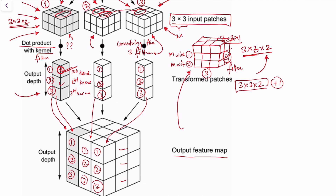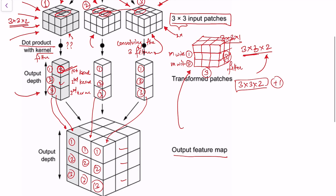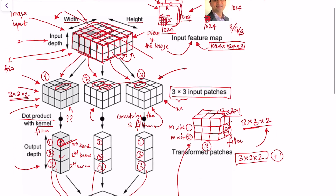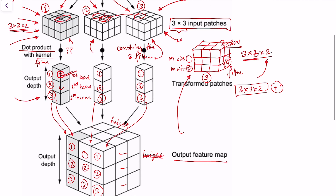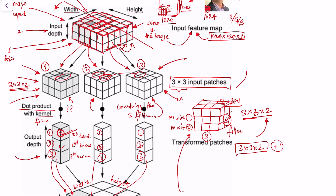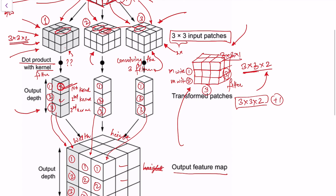The output feature map has its own width, height, and depth. The width and height of the output feature map are decided by the size of the filters — the size of the kernels. If the kernel size were 5 by 5, we would extract 5 by 5 patches, not 3 by 3. So mainly the size of the filter decides the height and width of the output feature map, though there are other parameters too.